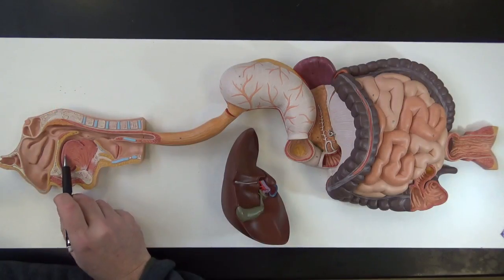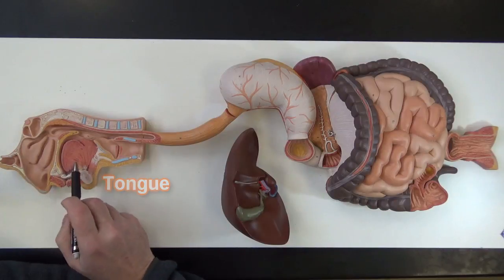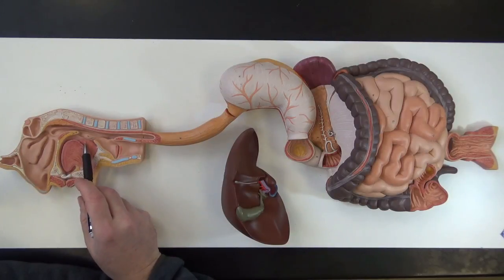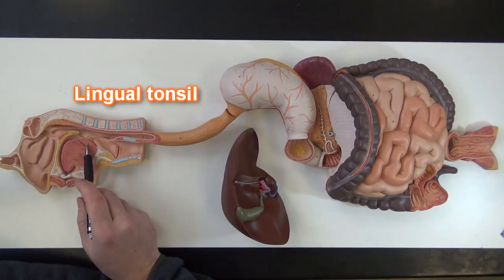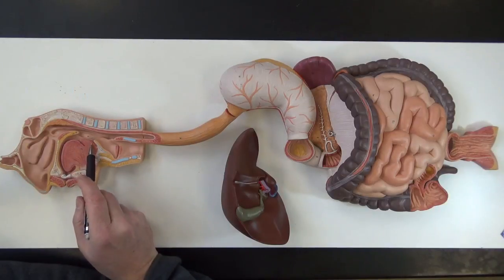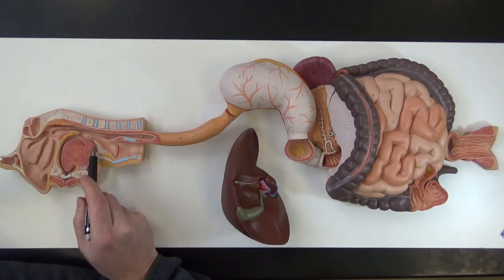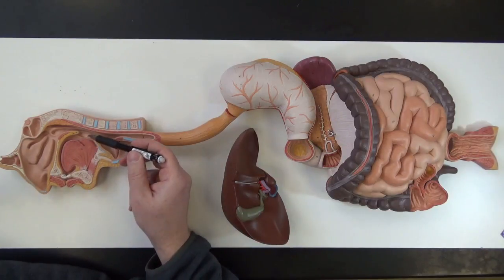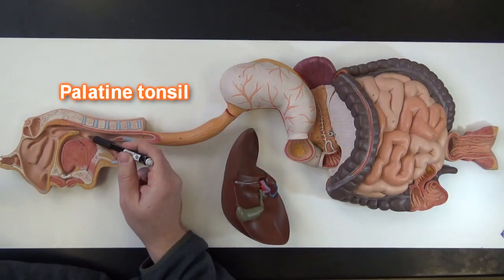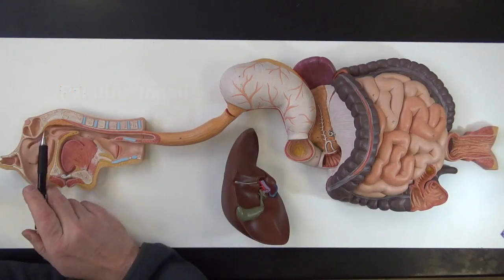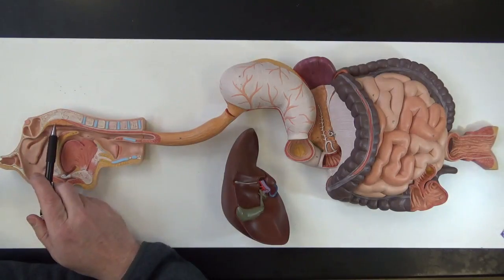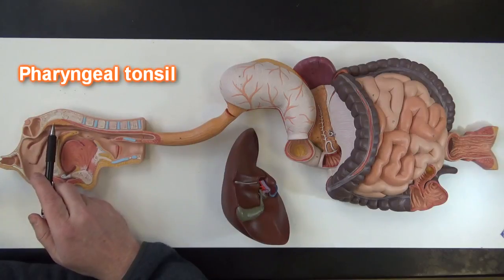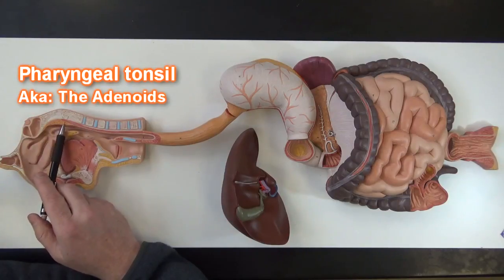This is the tongue right here. And this right here is the lingual tonsil. This lingual tonsil will help to prevent entry of foreign invaders — microorganisms, things like that. Here's a palatine tonsil right here, also helping in that regard. And this right here is the pharyngeal tonsil, also known as the adenoids.